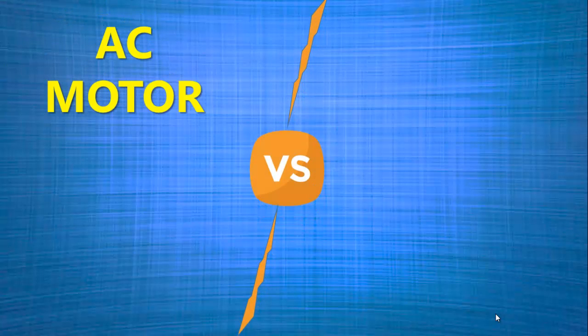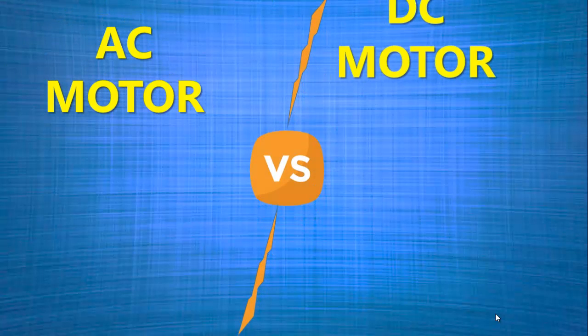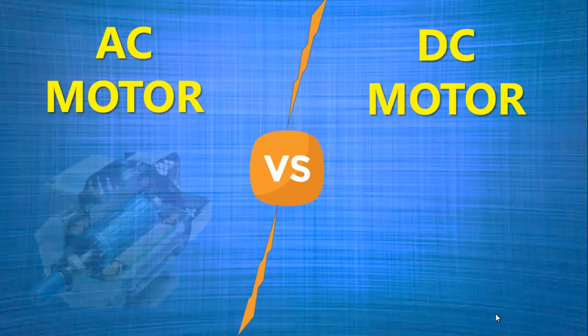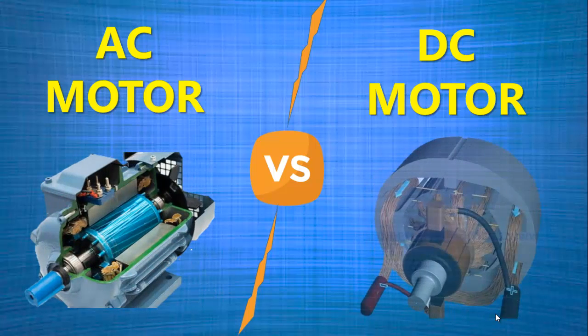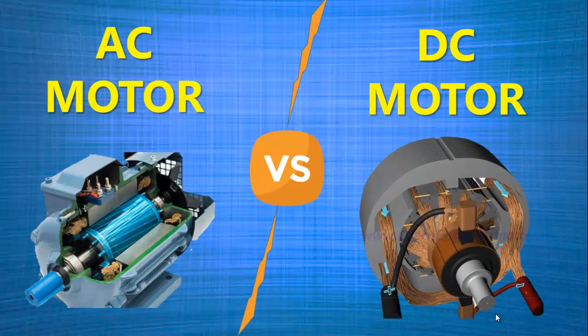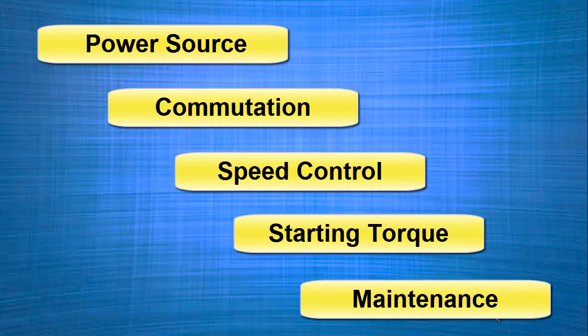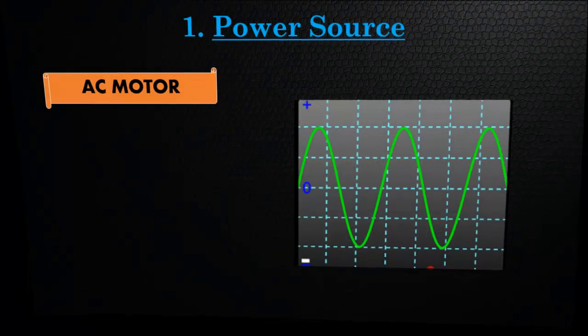Welcome back to Electrical Lectures channel. In today's video, we're going to discuss the key differences between AC motors and DC motors — AC, alternating current, and DC, direct current. Motors have several differences, including how they operate, their applications, and their characteristics. Here are some of the main differences between AC and DC motors.